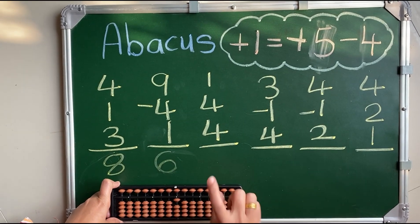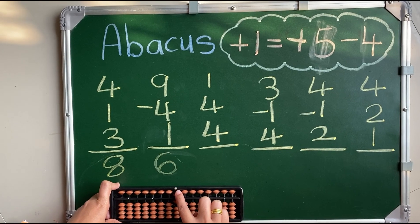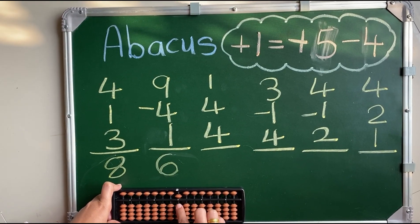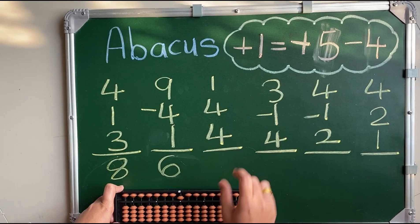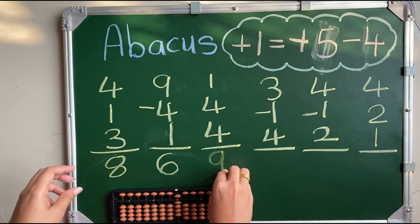1 plus 4. So, for plus 4 what we will do? Plus 5 minus 1 plus 4. Answer is 9.